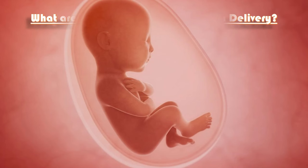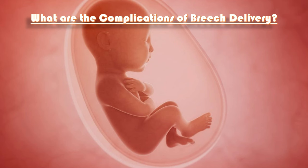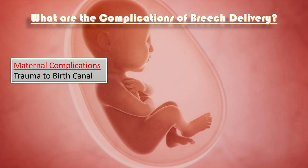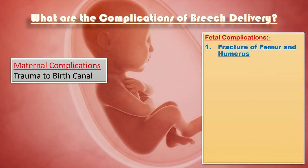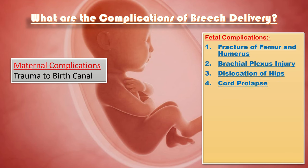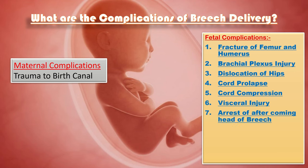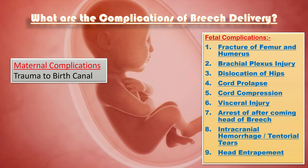Complications of vaginal breech delivery include maternal complications such as trauma to the birth canal. Fetal complications include fracture of the femur and humerus, brachial plexus injury, dislocation of hips, cord prolapse, cord compression, visceral injury, arrest of the aftercoming head of the breech, intracranial hemorrhage or tentorial tears, and head entrapment.